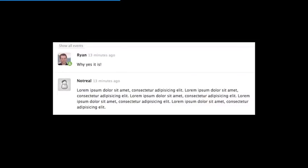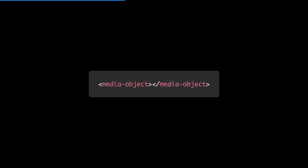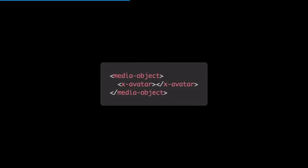If we break that up into components, we'd have our media object wrapping around the whole thing, our avatar or icon, a media object body, a header, and some content. In HTML it could be named media-object. Inside that we'd have our avatar element, and because we're assuming an avatar is always going to be an image, we can extend an existing element using the is attribute — is says this is my custom element and I want to extend this existing element with extra functionality.